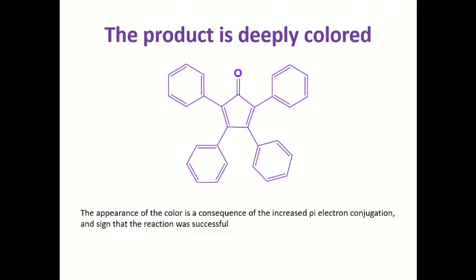This product is completely colored. The appearance of this color is a consequence of the increased pi electron conjugation, a sign that the reaction was successful. As I mentioned before, the conjugation is being generated by each of the elimination reactions. This molecule is almost completely delocalized, and this electron pi configuration is the one that is the cause of the color of this product. It means that the purity and the obtention of this product can also be determined physically, at first instance, by looking at this color when the crystals are formed.